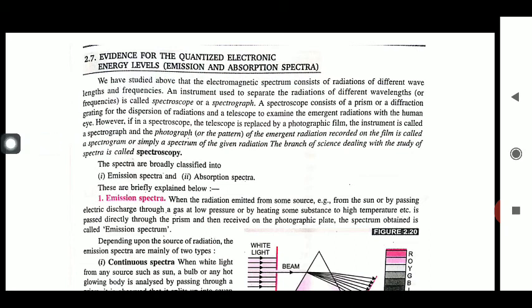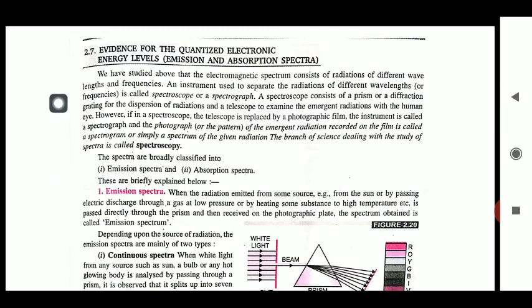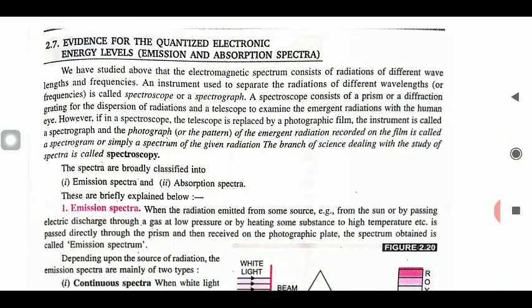This branch of chemistry is important because spectroscopy provides the basic criteria for the development of the Niels Bohr model. We have previously discussed two models of the atom — the Thomson model and the Rutherford model — along with the various drawbacks of the nuclear model. After completing these two models, we are unable to describe the real internal picture of the atom, so we are looking for the next model, that is the Niels Bohr model. This branch of spectroscopy is very important for its development.